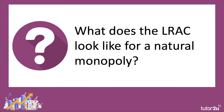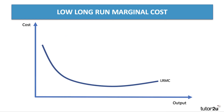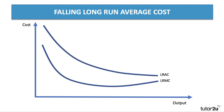What does the long-run average cost curve look like for a natural monopoly? It will fall continuously over a very large range of output. The marginal cost — the cost of adding extra users to the network — is low and often falling. Because marginal cost is low and fixed costs are high, the average cost will keep falling due to continuous economies of scale. Marginal cost is always below average cost over the whole range of possible output.